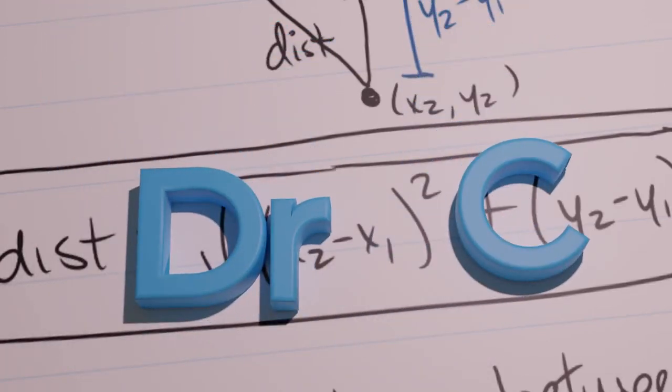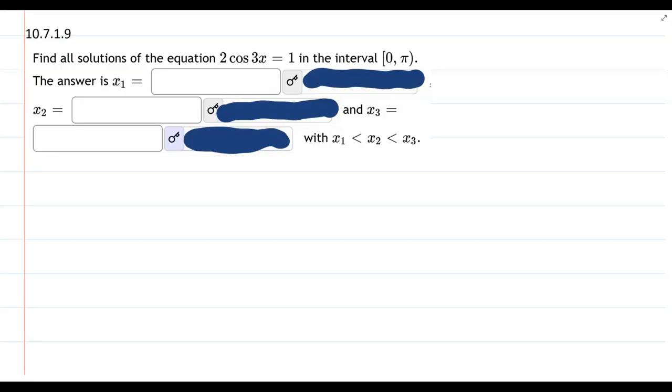We're about to solve 2 cos 3x equals 1, and we're only looking for solutions in the interval 0 to 2 pi.